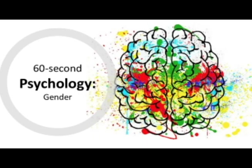The first thing to remember when talking about gender is that gender and biological sex are different concepts. While someone may be biologically male or female according to their genes, gender is the way a person identifies with the concepts of masculinity and femininity.